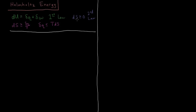From the second law of thermodynamics, for any spontaneous process the entropy must be greater than or equal to zero. It's zero if and only if the process is reversible, and if it's irreversible the entropy change must be greater than zero. We define this via the Clausius inequality: dS is greater than or equal to dq divided by T. Rearranging, dq is less than or equal to T dS.